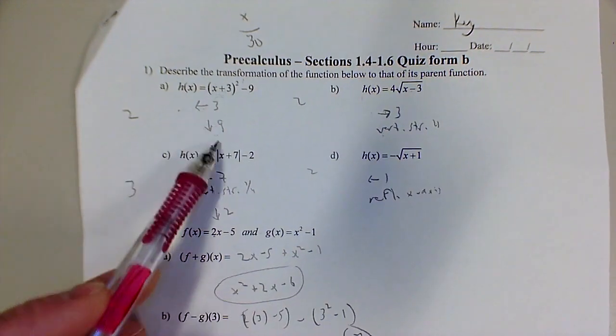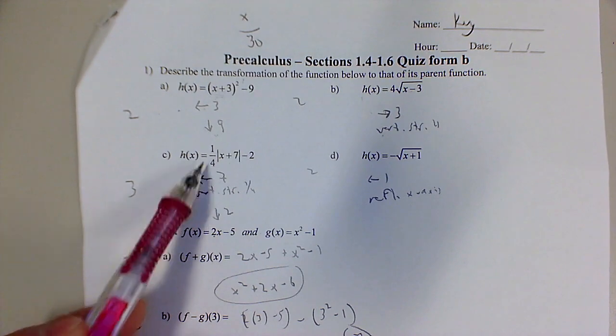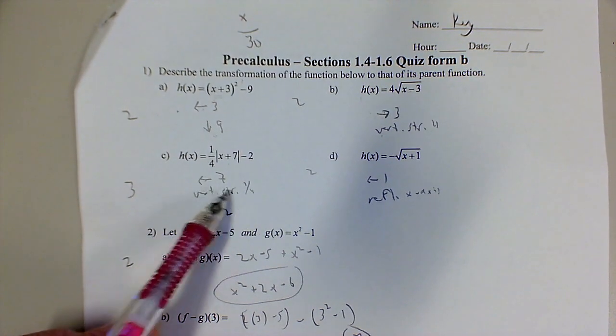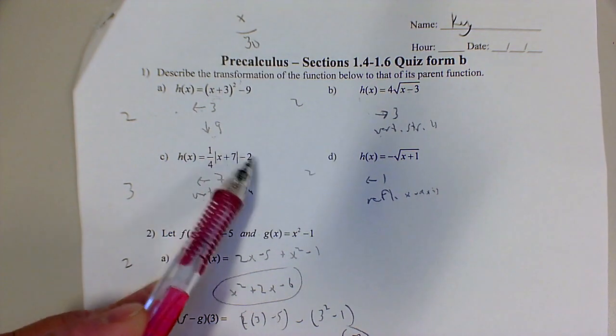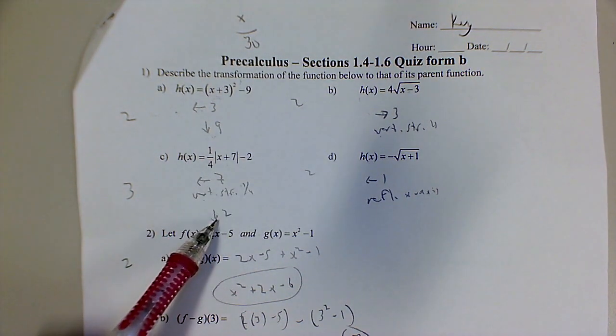Same idea up here, except we're shifting it left 7. This is a vertical stretch of factor 1 fourth, or vertical compression of factor 4. Either one would be fine. And here we've dropped it 2, so it's down 2.